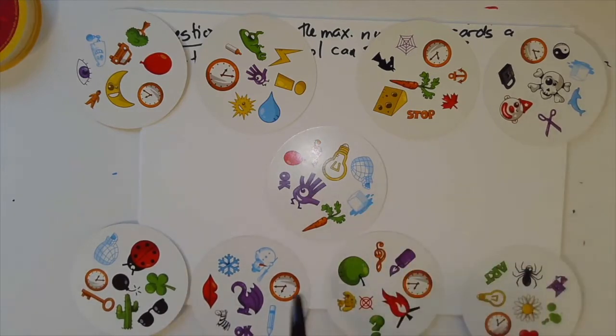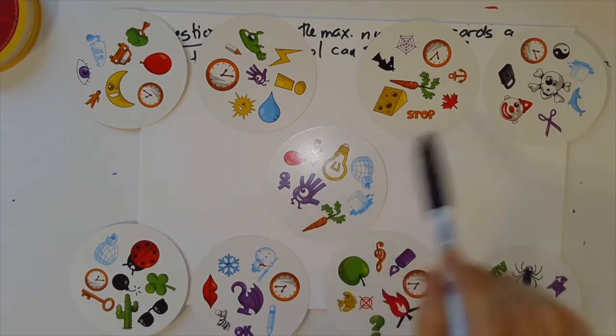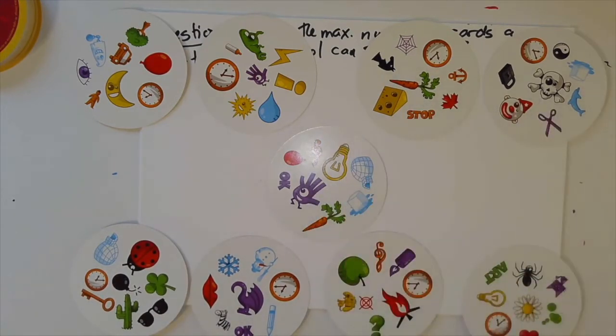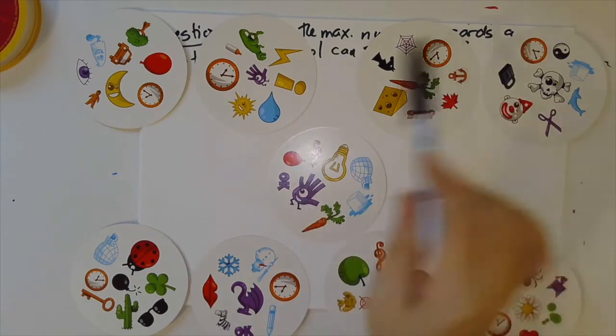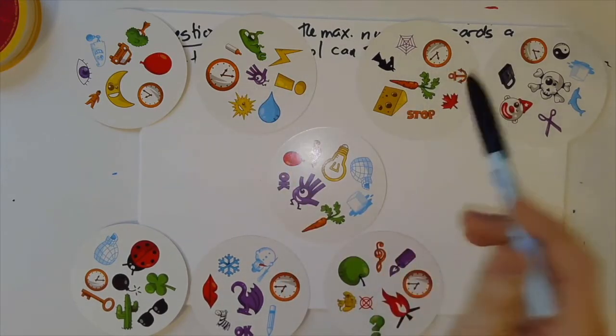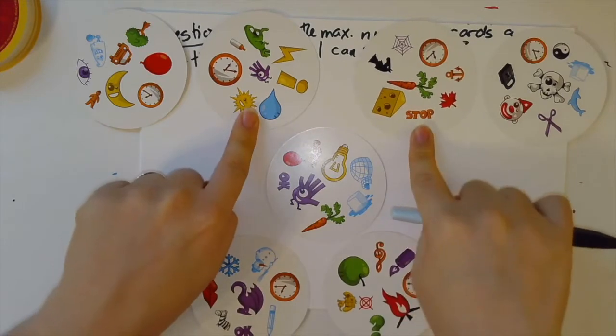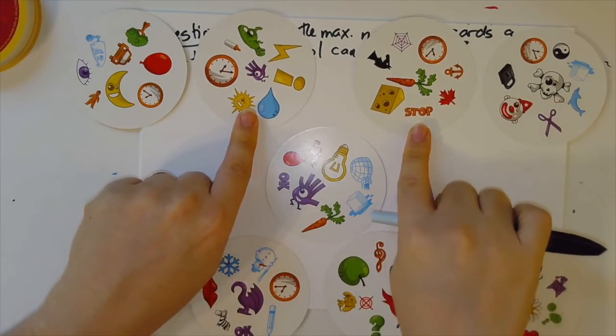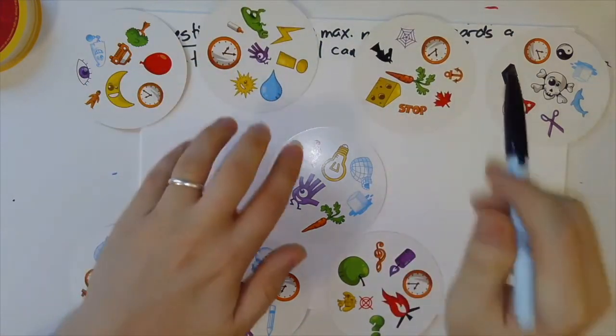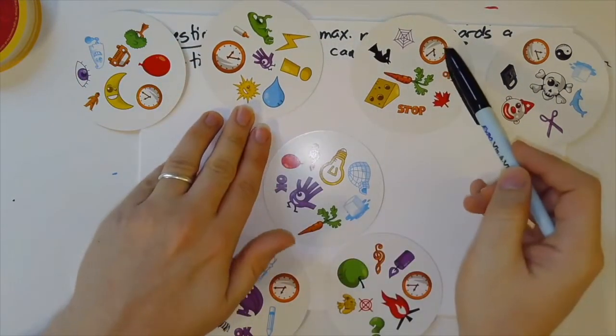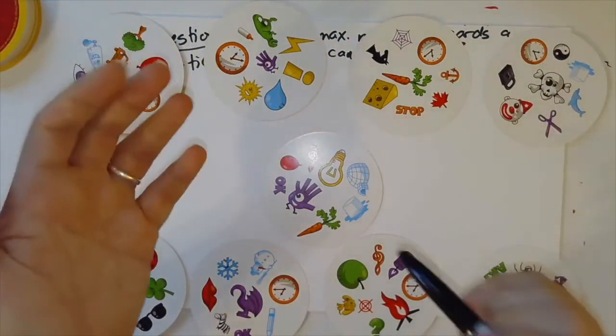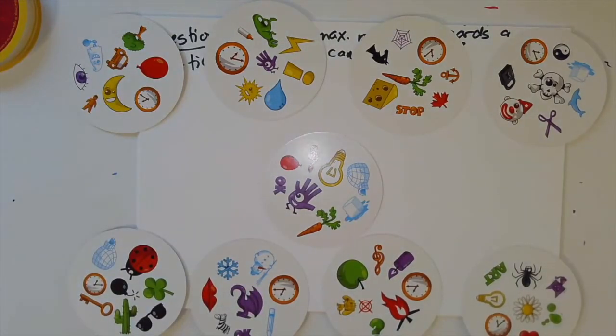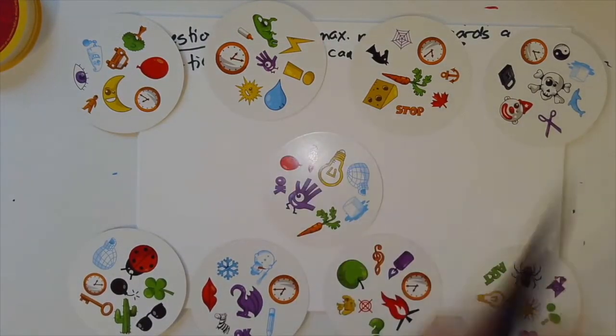Now, why is it that the hand, for example, can't show up on two of these cards? Well, the hand can't show up on two of these cards because if the hand was on, say, this card and this card, then that would mean that these two cards shared both the hand and the clock. But now they don't meet the requirement that every pair of cards shares exactly one symbol because these two share two.